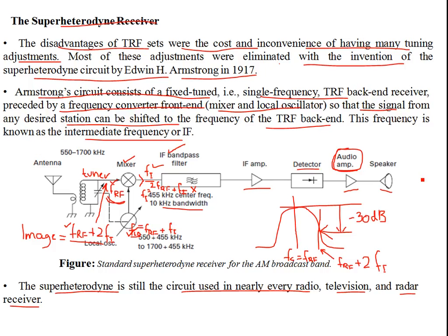Some different ways of the superheterodyne receiver have been considered. The problem is the image frequencies that can come along with the desired RF frequency to which the bandwidth filter is tuned. So if you don't have any RF bandpass filter before the mixer, you're going to have these two frequencies come along in the intermediate bandpass filter, and they can be demodulated with different center frequency.